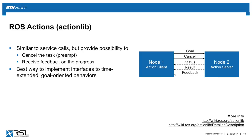ROS actions are very similar to services, but they're meant for requests that take a longer time. With services, you send a request and very quickly get back a response. But if you want to send out a motion plan that takes a long time, you don't want to do that over service calls because they're blocking — you send it out and wait for the response. So for these cases, we have ROS actions. In comparison to service calls, actions provide the possibility to cancel the request — for example, if you tell the robot to go somewhere and then decide to stop, you can cancel or preempt the task.